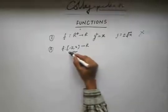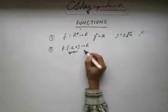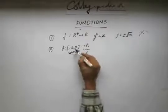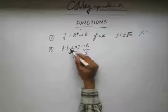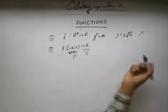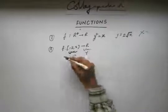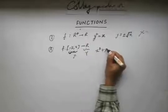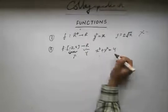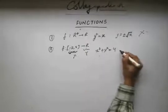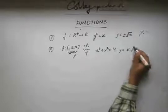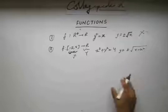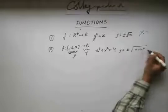Let's say this is the set x and this is the set y. The set x has elements between minus 2 to 2, and set y has all real numbers. This is how the relation or the rule is defined. So this is a function. Here again, I will get y² = 4 minus x². For a single value of x, I will get two values of y. So this is not a function.